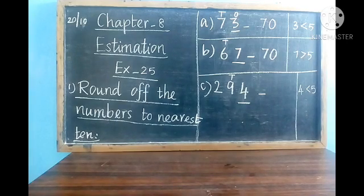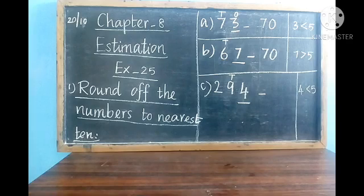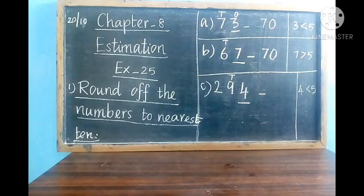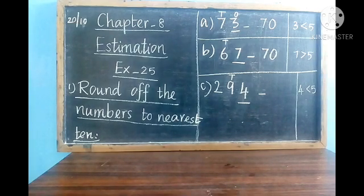Now look at the C sum: 4 is in the ones place. 4 is less than 5, so we write the same tens place value. What is in the tens place? 9. So our answer is 290.